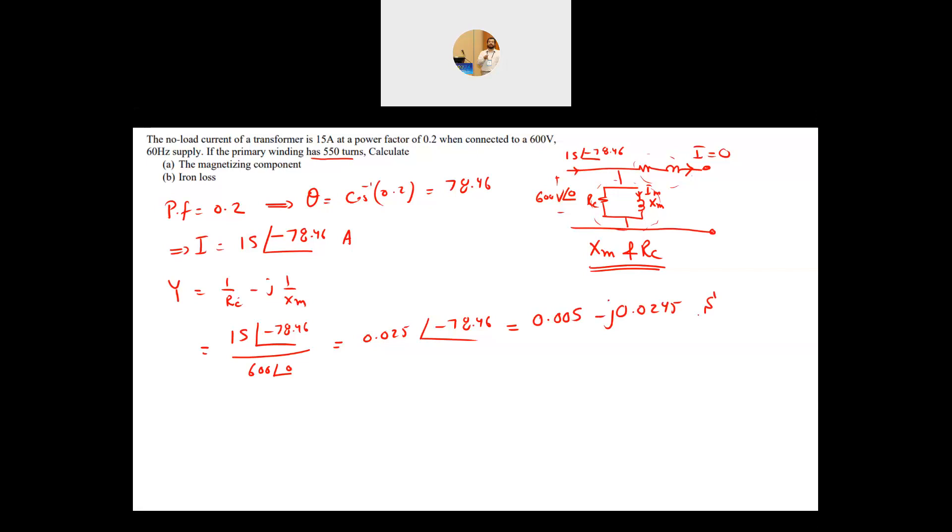So this is your 1 over RC, this is your 1 over XM. Basically your RC is equal to 1 over 0.005, which is equal to 200 ohm. And your XM is equal to 1 over 0.0245, and this is equal to 40.82 ohms. So we found RC and XM.